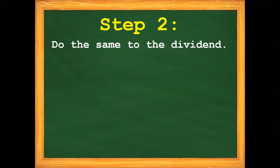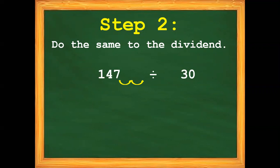Step 2: Do the same to the dividend. We have 147 divided by 30. Our dividend is 147, so we need to move the decimal point twice. Since there are vacant spaces after we move the decimal point twice in our dividend, we need to put 0 as a place value holder. So now we have 14,700 divided by 30.